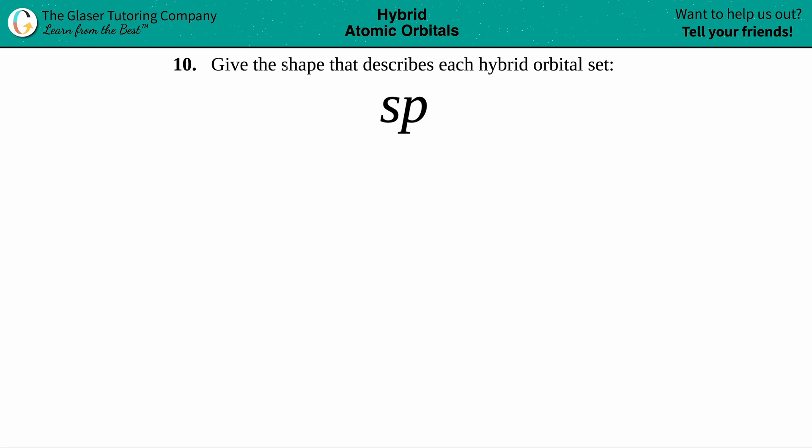Number 10, give the shape that describes each hybrid orbital set. We have sp here, so when it says give the shape, we just have to draw the shape. The easiest way to do this is to just count up how many letters you have here. In this case, it's just an s and a p, so you have two total letters.